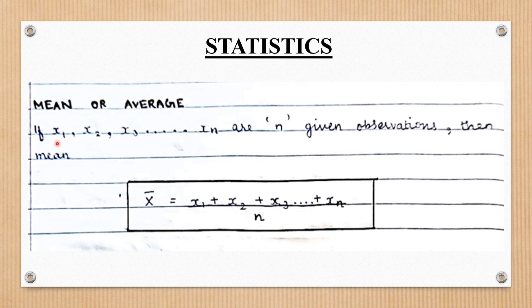For example, let's consider when there are n given numbers — x1, x2, x3 up to n — then the mean is calculated by the given formula. Mean is represented by x-bar. x-bar is equal to the sum of given numbers divided by the total number of given numbers, that is n. This is the formula to calculate the mean.